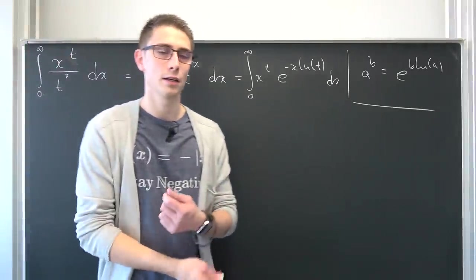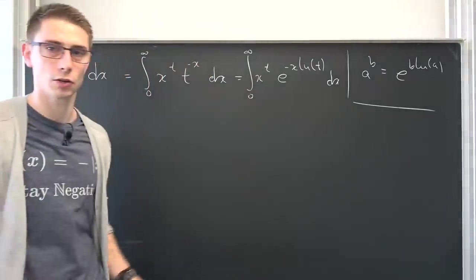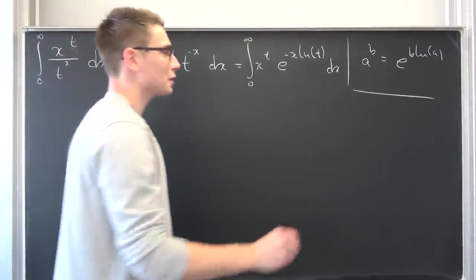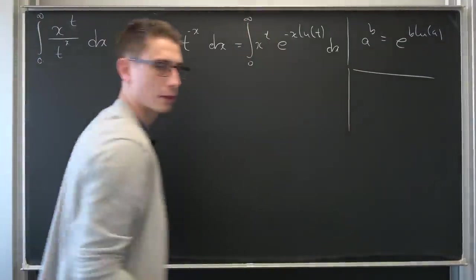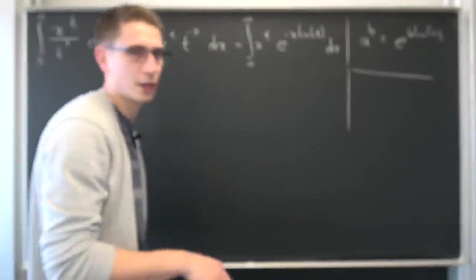The integral from 0 to infinity of x to the t power times e to the negative x times the natural log of t, integrated with respect to x. This should now ring a bell for you. If you see something like this, it should go in your brain: Oh damn, yeah, that's totally right. This is what we have to do right here. Take a look at something and maybe you can see where this is going to go.